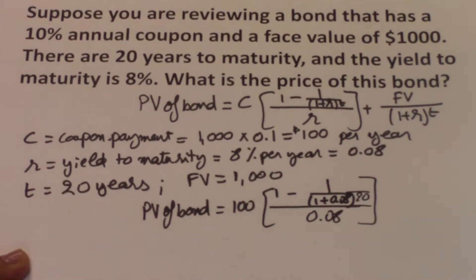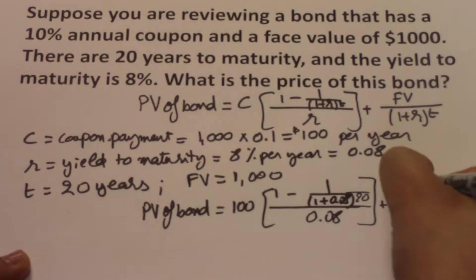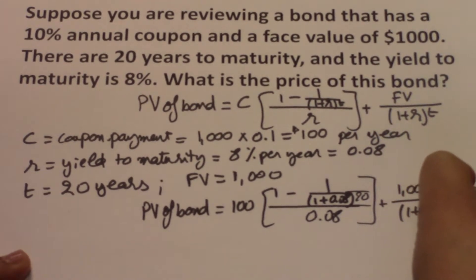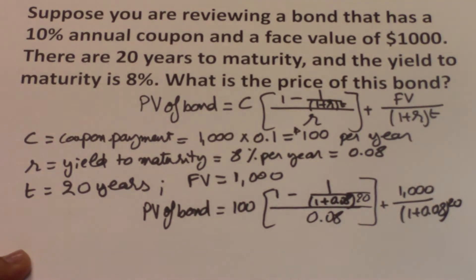Plus the future value, which is $1,000, divided by (1 plus 0.08) to the power of 20.